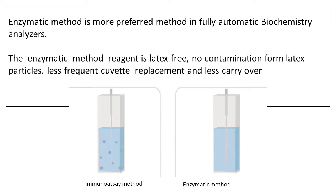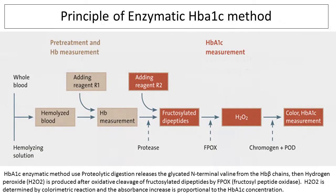The enzymatic method also offers less frequent cuvette replacement and less carryover. The principle of the enzymatic HbA1c method uses proteolytic digestion to release the glycated N-terminal valine from the hemoglobin beta chains. Then hydrogen peroxide is produced after oxidative cleavage of fructosylated dipeptides by fructosyl peptide oxidase. The hydrogen peroxide is determined by colorimetric reaction, and the absorbance increase is proportional to the HbA1c concentration.